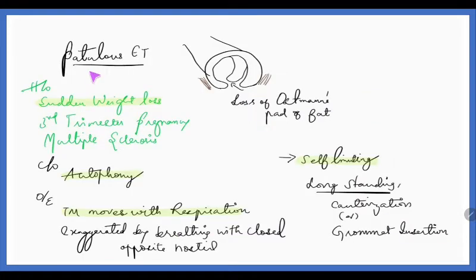Next is a condition called patulous Eustachian tube. What is this? The Eustachian tube will be abnormally patent. It will not close and open nicely. Mostly, one of the causes could be loss of peritubal cushion of fat which is actually supporting the Eustachian tube. So the person will give a previous history of sudden weight loss, or she will be in the third trimester of pregnancy, or multiple sclerosis. This will be the history and she will complain of autophony. The person will be hearing his or her own respiratory sound or heartbeat also.